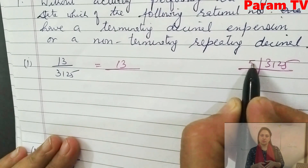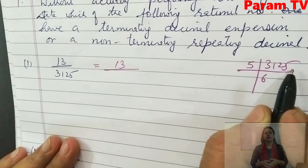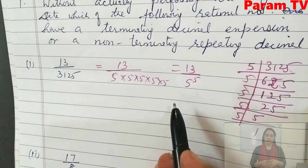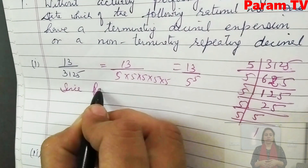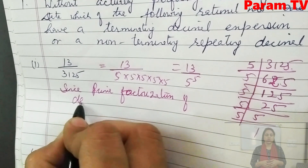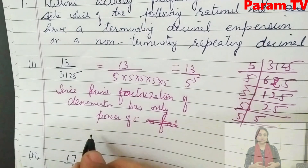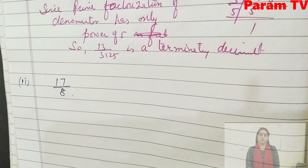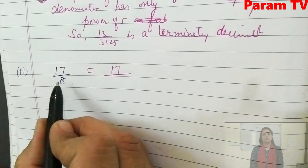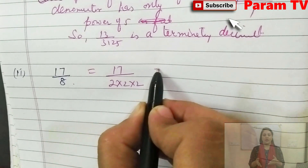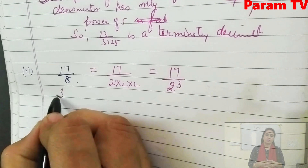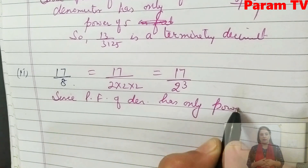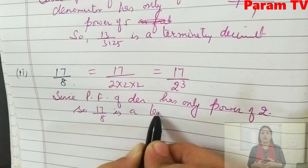When you factorize 3125, starting from 5: 5 goes into 3125 — it doesn't divide by 2. So 3125 = 5 × 5 × 5 × 5 × 5, which is 5⁵. The denominator has only five as prime factor. Since the prime factorization of the denominator has only power of 5 as a factor, 13/3125 is a terminating decimal.